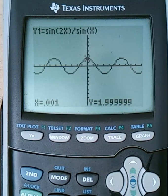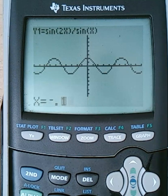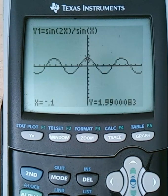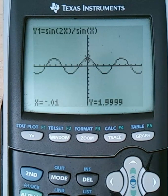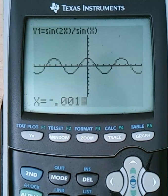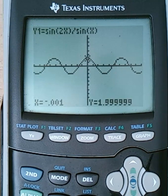Now I'm going to go from the left. Negative 0.1, 1.99. Negative 0.01, 1.9999. And negative 0.001, 1.999999. Also tending to 2. So the limit as x approaches 0 of sine 2x over sine x is 2.